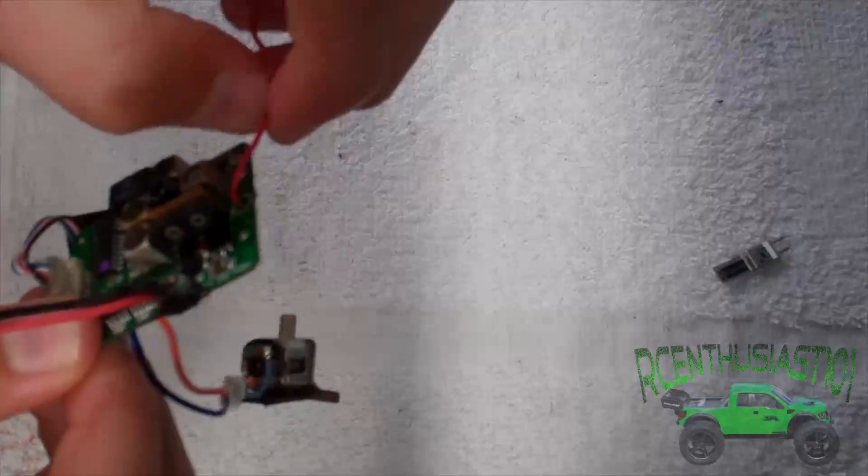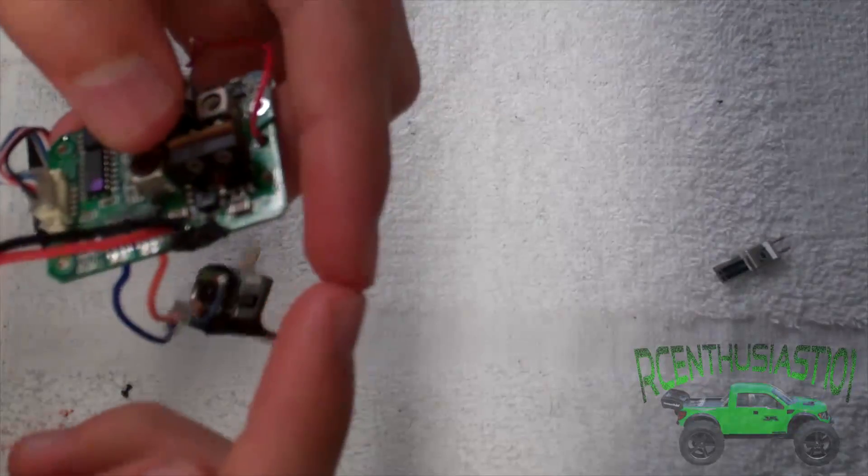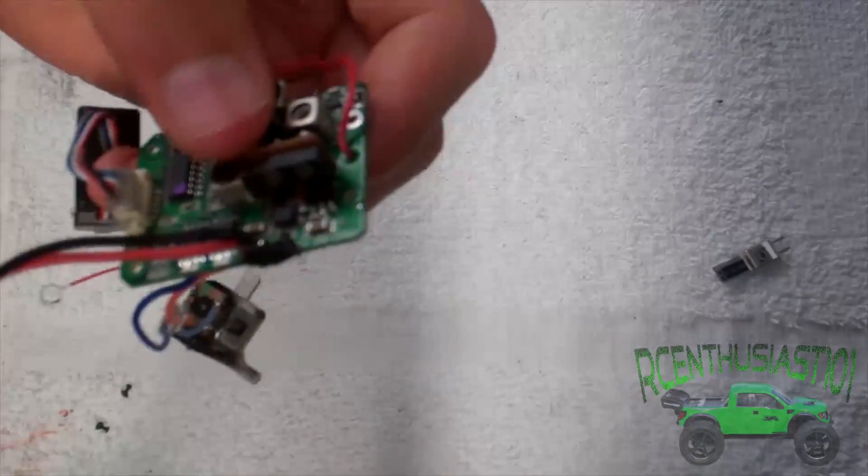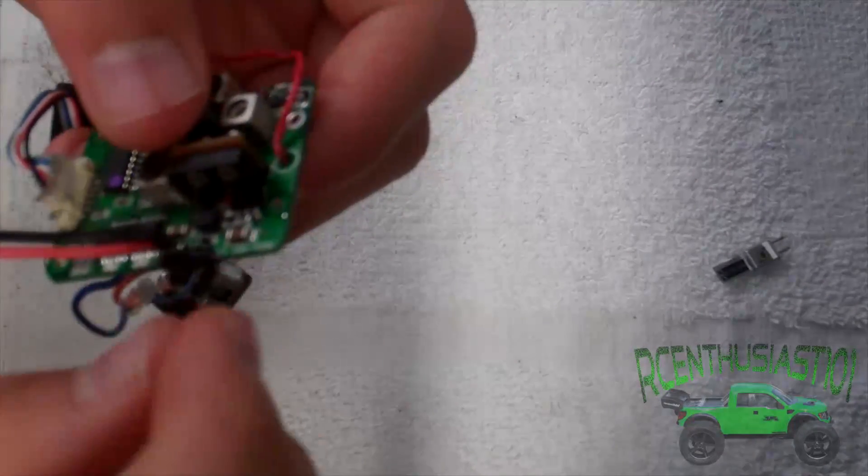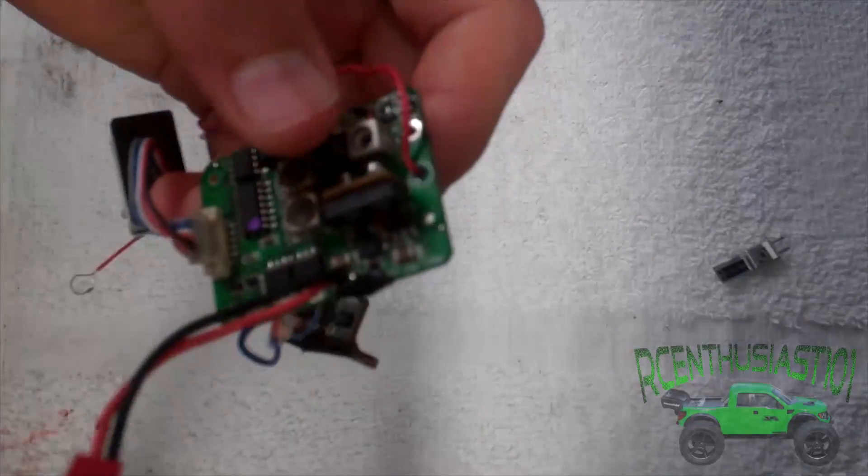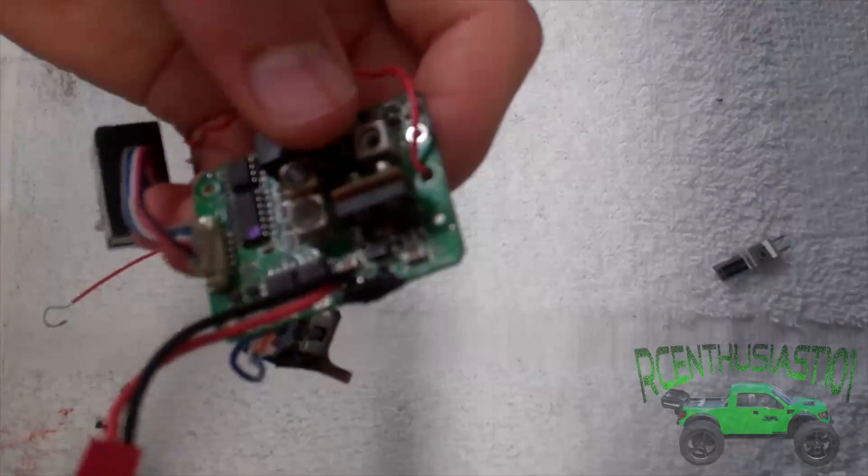And if you really be really cautious about it you can solder them together before you do that but in my case since the whole sleeve of the wire came off I just wound them together and then put them down but that's just something you might want to do with bigger ESCs and bigger wires.